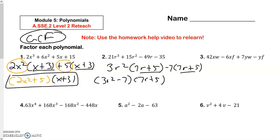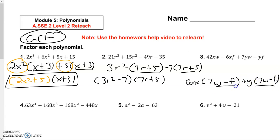Taking a look at the next one. I look for a GCF all the way across — there isn't any. So for the first two, I notice that I can take out a 6 and an x. 42 divided by 6 is 7, the x cancels out, I get left with a w. Then I bring down the minus, the 6x cancels out, I get left with just an f. On the last two, I can only take out a y, so I get a plus y and then 7w minus f. If I did it correctly, these match. My first parenthesis is going to be 6x plus y, and then 7w minus f.